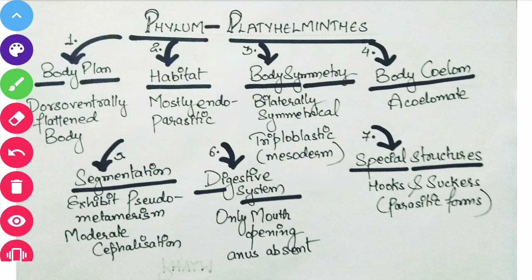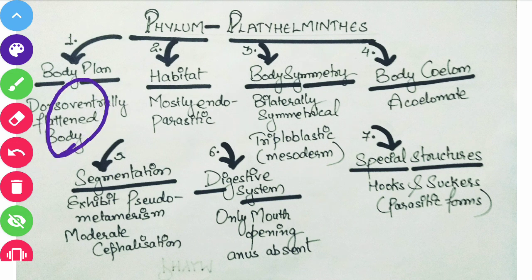Coming to the name, as the name suggests — Platyhelminthes — 'platy' means flat, 'helminths' means worm. So generally they are known as flatworms, meaning the animals present in this phylum have a dorsoventrally flattened body. They are known as the flatworms.